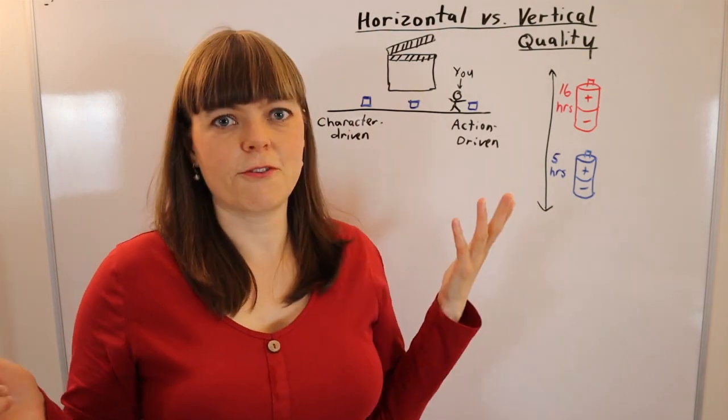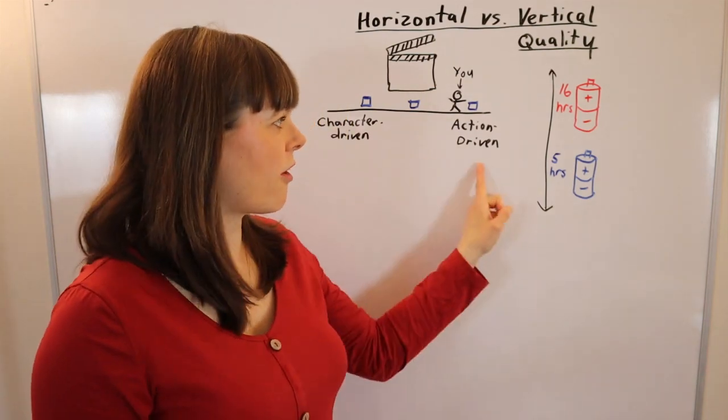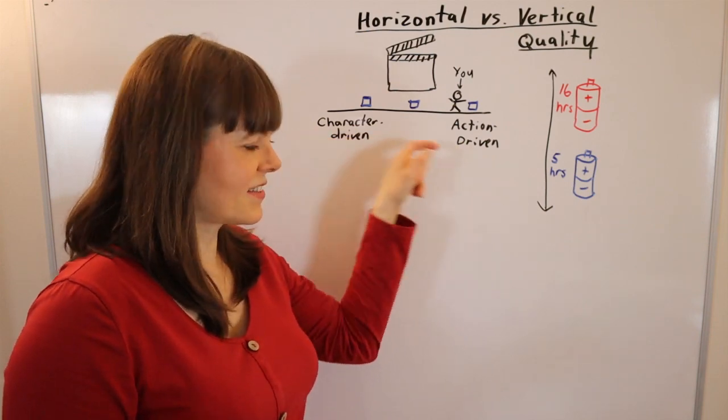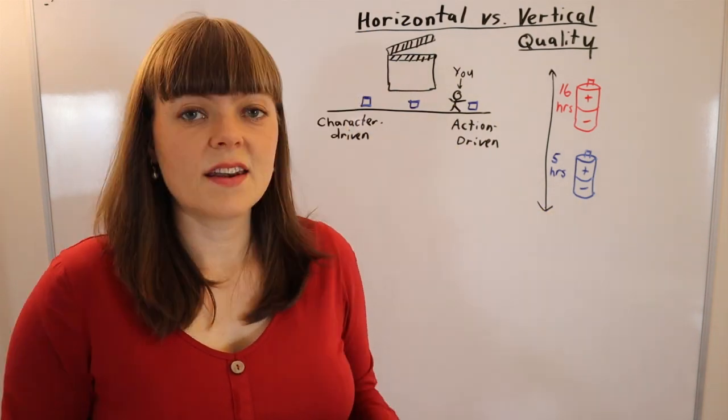Same thing with food, like how sweet do you like your coffee? You're going to fall along some spectrum where the x-axis dimension is going to be how much sugar is in the product.